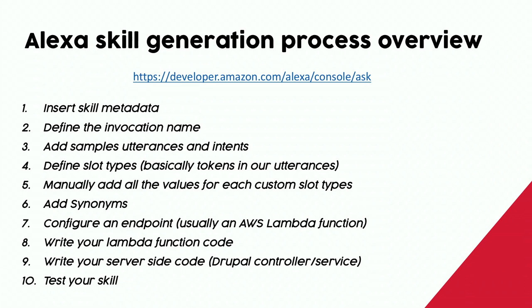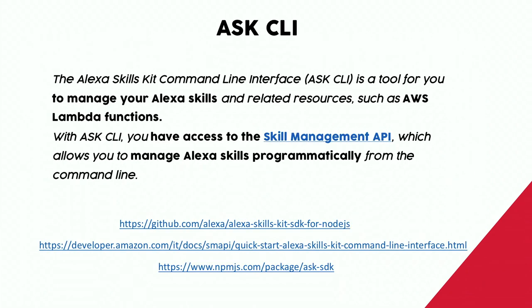What we tried is to integrate Drupal into this process. We wanted Drupal to talk with the interaction model of Alexa — we don't want them to be separate. For instance, we want to avoid manually managing custom slot types; we want them to be generated from Drupal. ASK CLI is a command-line interface that allows you to manage your Alexa skill and related resources. You can run the 'ask new' command to create a skill that lives in code, so you can track changes to your skill.